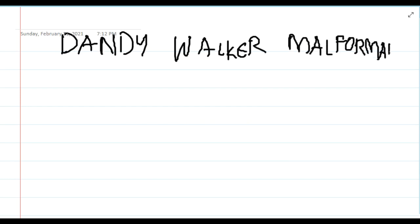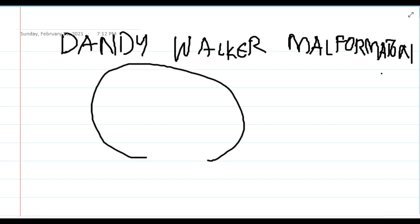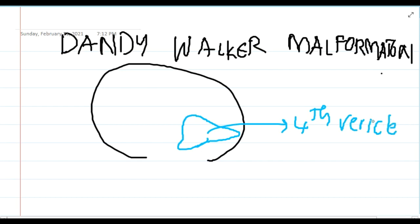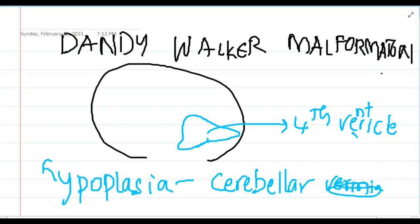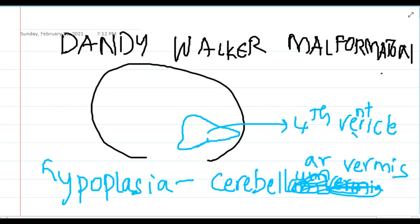Dandy Walker malformation is a posterior fossa malformation associated with cystic expansion of the fourth ventricle into the posterior cranial fossa. You will see cystic expansion of the fourth ventricle in the posterior cranial fossa, and there will be hypoplasia of the midline cerebellum — that is, hypoplasia of the cerebellar vermis — along with enlargement of the fourth ventricle.